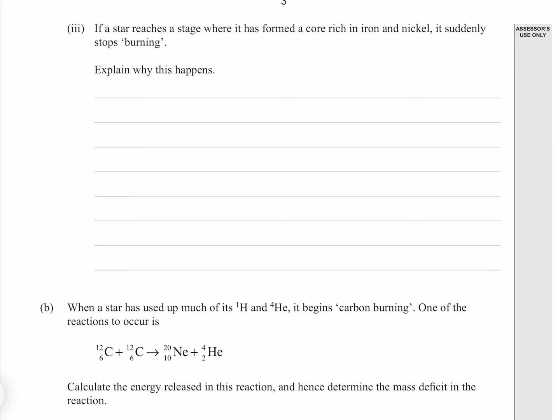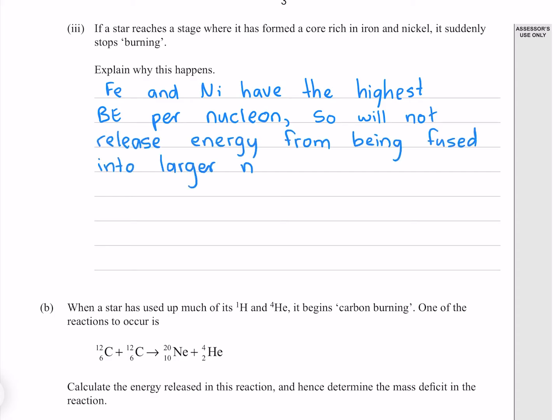If a star reaches a stage where it has formed a core rich in iron and nickel, it suddenly stops burning. Explain why this happens. Iron and nickel have the highest binding energy per nucleon, so will not release energy from being fused into larger nuclei.